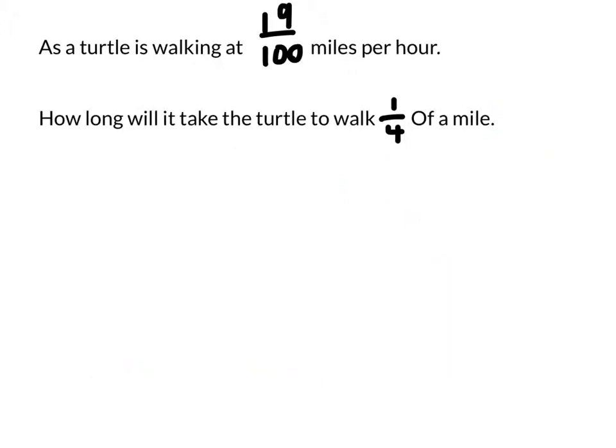All right, this is the last problem in the set. Here we have a turtle that is walking at 19 hundredths miles per hour, and what we want to know is how long it will take the turtle to walk one-fourth of a mile. Now what this is really asking is how many times 19 hundredths goes into a fourth. So we're going to have to take the fourth, and we're going to divide it by the 19 hundredths. This will tell us how many 19 hundredths fit into the one-fourth.